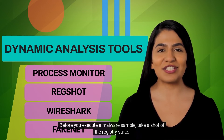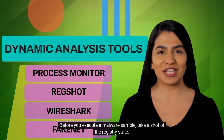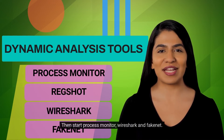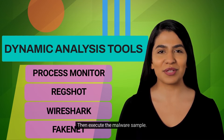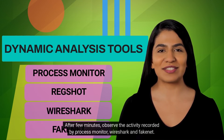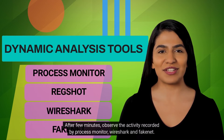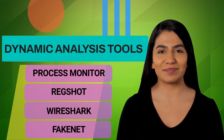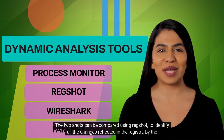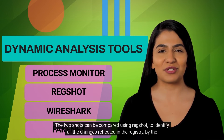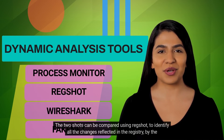Before you execute a malware sample, take a snapshot of the registry state. Then start Process Monitor, Wireshark, and FakeNet. Then execute the malware sample. After a few minutes, observe the activity recorded by Process Monitor, Wireshark, and FakeNet. Then take another snapshot of the registry. The two snapshots can be compared using RegShot to identify all the changes reflected in the registry by the malware.